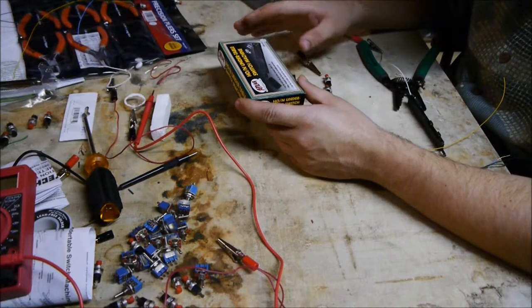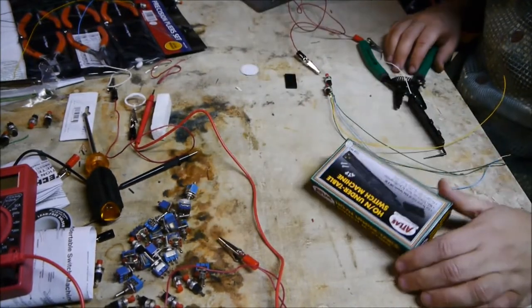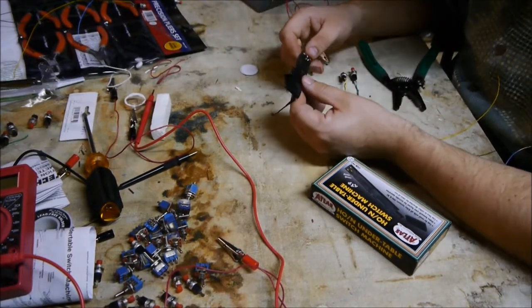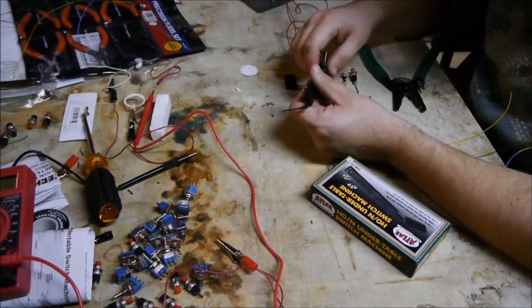And I don't like the above ground remote switch in N scale, because it's very long and very unprototypical. But I found under the table switch machines at modeltrainstuff.com for about six bucks apiece. And I figured, you know what, if I'm going to pay a little bit less for ground throws, I might as well buy the switch machines.